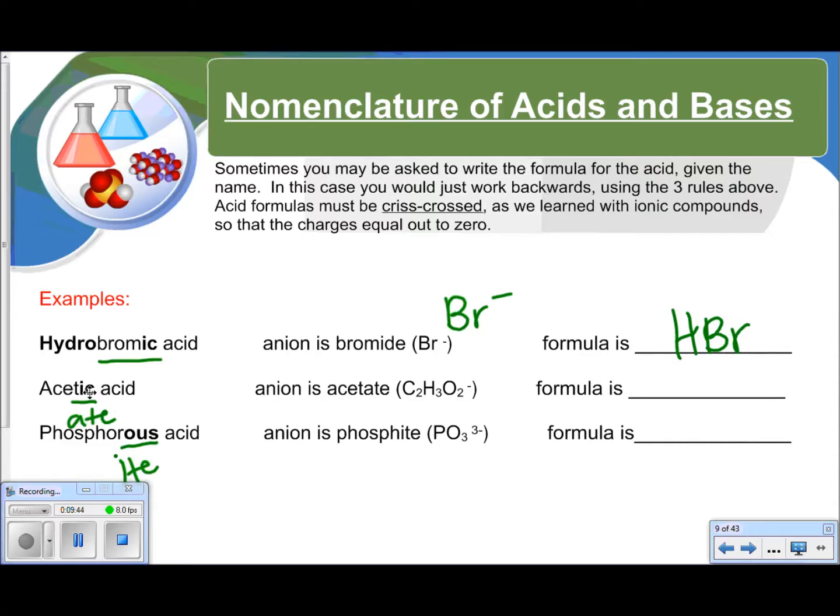Acetic acid. We take '-ic' and change it back to '-ate'. So the anion is acetate. Acetate is C2H3O2 and has a negative 1 charge. When we crisscross them, we get HC2H3O2. Phosphorous acid, so '-ous,' goes back to '-ite.' That means we're looking for the phosphite ion, which is PO3 3-. Now, when we crisscross this time, you have to crisscross hydrogen, which is plus 1, with phosphite, which is negative 3. So we get H3PO3. Don't forget to crisscross.